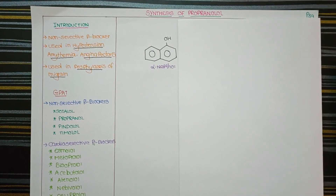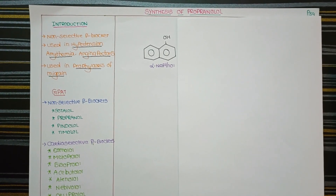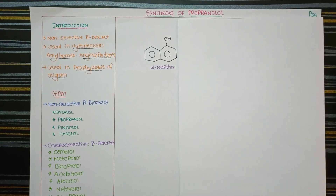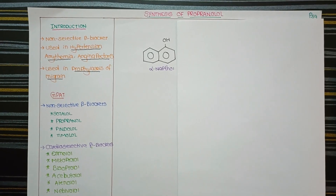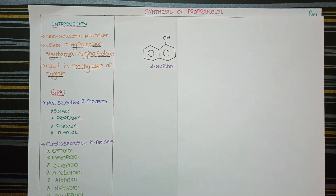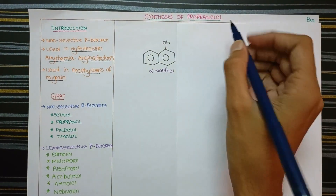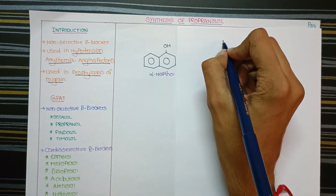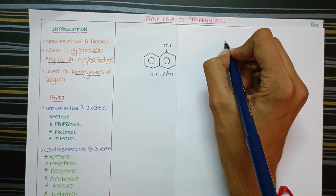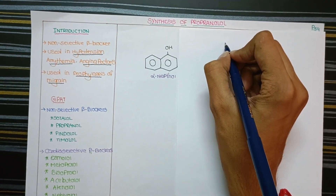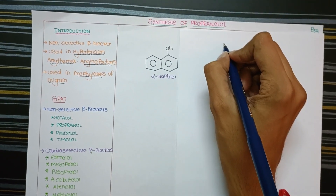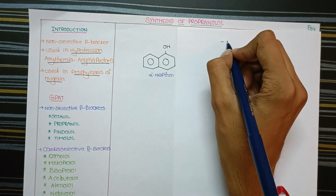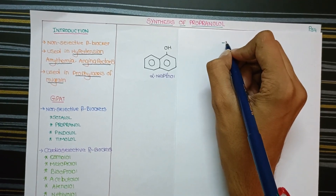Propranolol is a non-selective beta blocker. When identifying beta blocker drugs by name, note that they share the suffix '-lol'. This suffix helps identify the drug class.